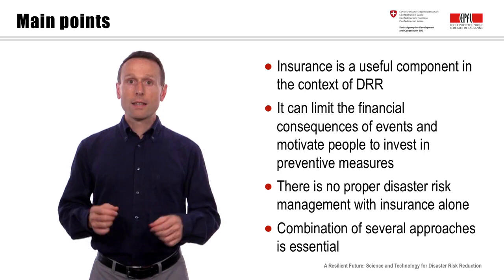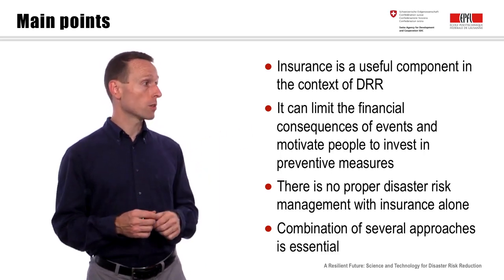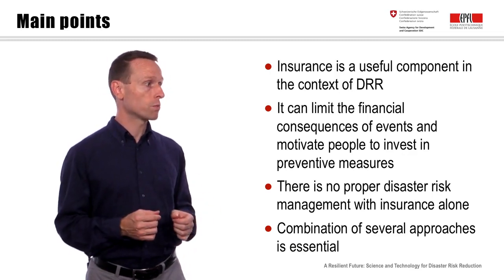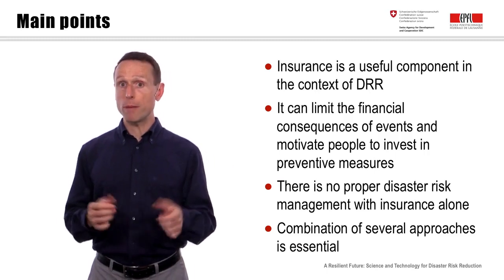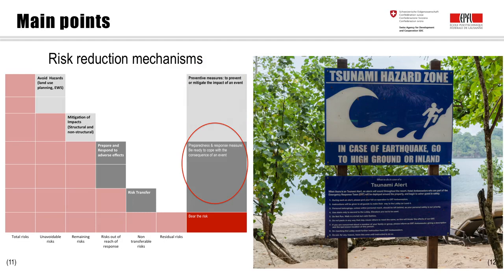Insurance is a useful component in the context of disaster risk reduction — it can limit the financial consequences of events and motivate people to invest in preventive measures. However, there is no proper disaster risk management with insurance alone. We definitely need a combination of several approaches: prevention and avoidance, mitigation of risks, preparation for events, and transfer of parts of the risk to insurance markets. In the context of disaster risk management, especially in emerging economies, prevention is almost always the cheaper option than insurance, at least in the long run.